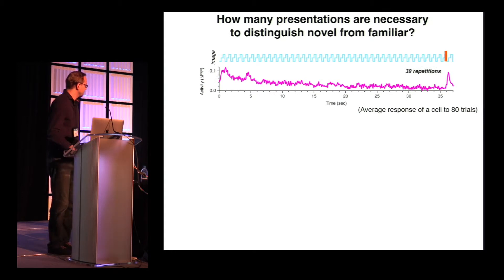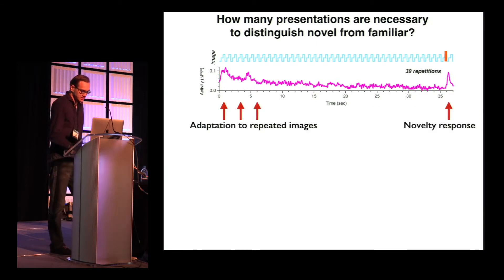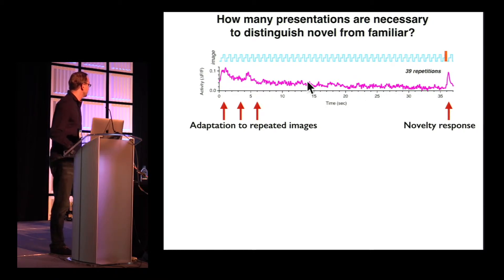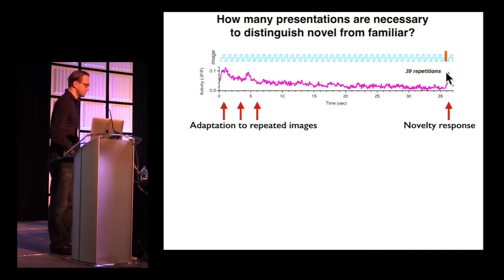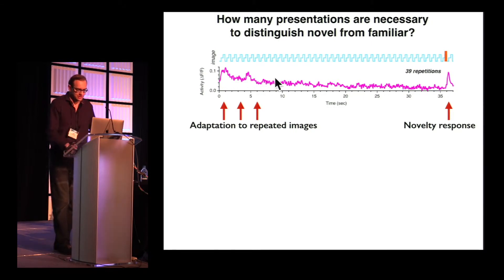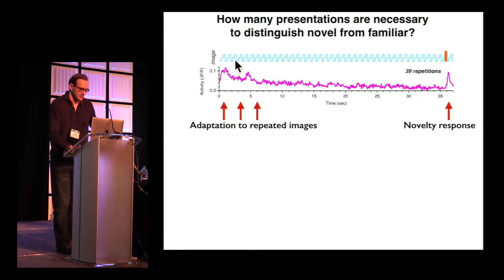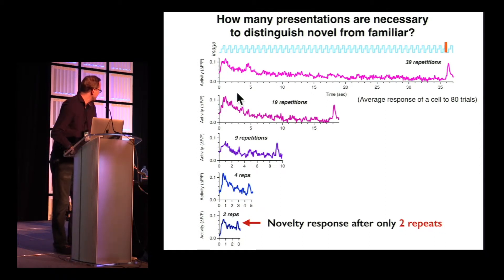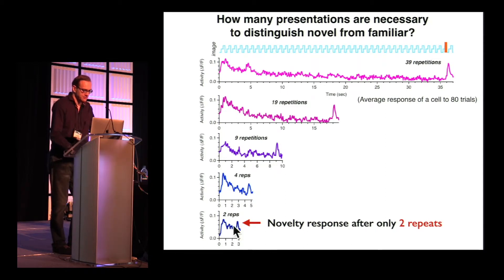For an average cell, averaged over 80 trials, we get an initially strong response that adapts to near-zero baseline in about a few seconds. The response to the novel image has roughly the same amplitude as the initial response — essentially a novel response, with many novelty responses piled on top of each other. When we decrease the number of repeats all the way to two — the minimum needed to call something familiar — we still get a detectable novelty response. So the adaptation is surprisingly fast.